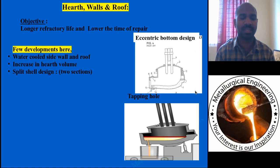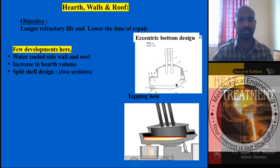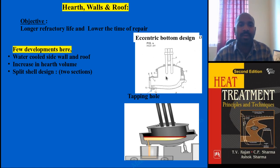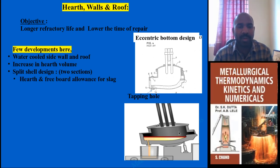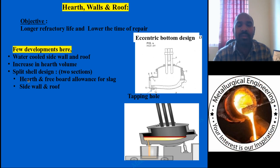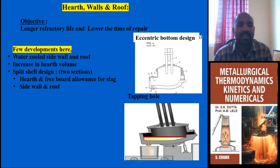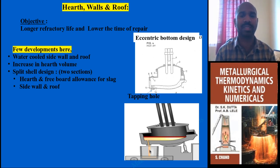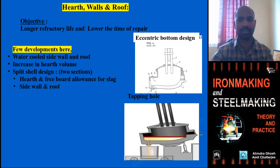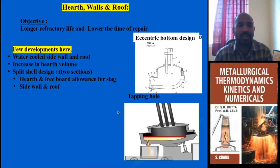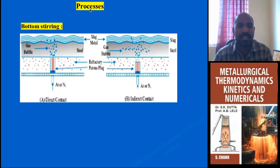Primary steelmaking is the refining process itself; secondary steelmaking is further refining. You can split the designs with respect to the wall, roof, and hearth bottom, designing the refractory lining differently for each section. The eccentric bottom design allows tilting of the furnace to tap out molten metal from one side while slag is removed from the top on the other side. The eccentric bottom design is one of the major developments in modern electric arc furnace technology.